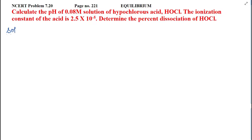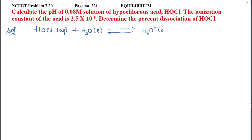First we will see the reaction. We have hypochlorous acid HOCl present. When you dissolve it in water, HOCl will react with water and hydronium ions will form, along with ClO⁻ negative ions. We don't include water in the equilibrium expression because water is a pure compound.